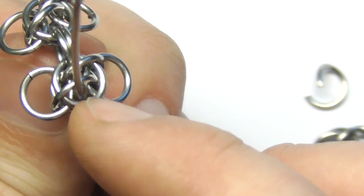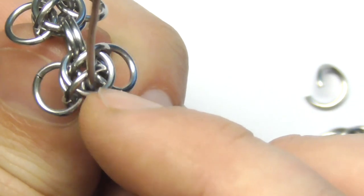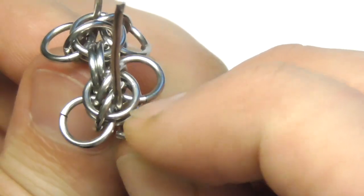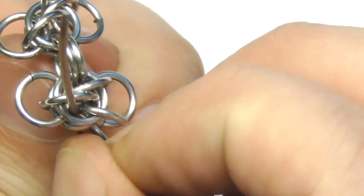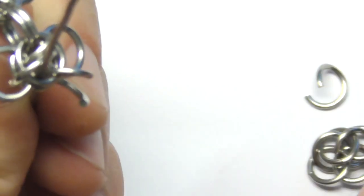So our connecting rings will go through these two rings. You can see where the piece of wire is going through here. So like that.